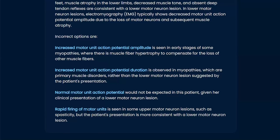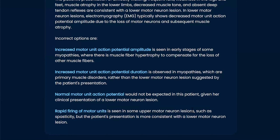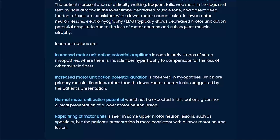These are important learning points. Rapid firing of motor neurons — just remember, that's going to be an upper motor neuron lesion, which gives you spasticity rather than flaccidity. For every question you struggle with, try to get more than just this one topic so you don't miss similar questions. Increased motor unit action potential duration is seen in myopathies — primary muscle disorders, rather than lower motor neuron lesions like in this patient.